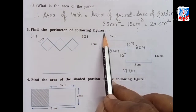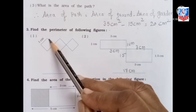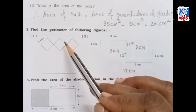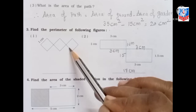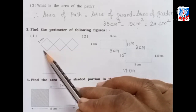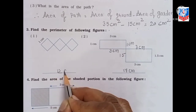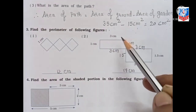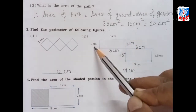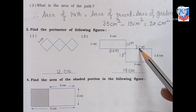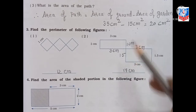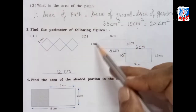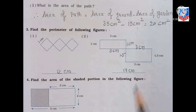Next question: find the perimeter of the following figures. For the first figure, each small segment is 1 centimeter, and counting all sides gives a total perimeter of 12 centimeter. For the second figure, the sides measure 1 cm, 3 cm, 3 cm, 1 cm, 3 cm, 3 cm, 1.5 cm, and 1.5 cm. Adding all these gives a total perimeter of 17 centimeter.